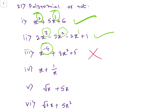Next one: x plus 1 by x. Here, what I will do is write x as it is plus. According to the powers and exponents formulas, 1 by x is x power minus 1. So here, power is minus 1. Minus 1 is not a whole number, so this is not a polynomial.